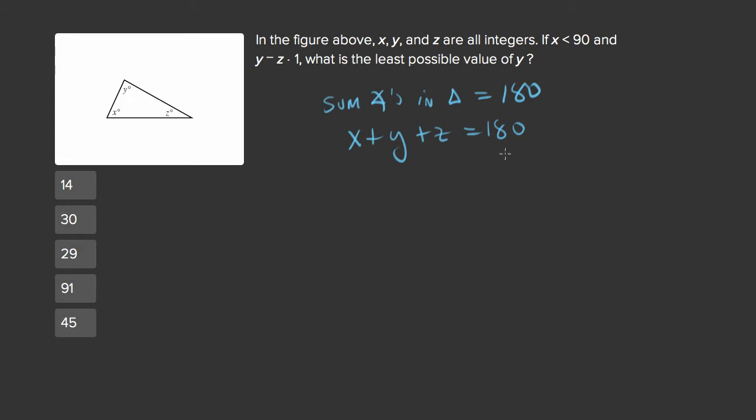Now this is an equation with three variables and we're trying to find the value of variable y. So we can't quite do it yet. In fact we're not actually just trying to find y, we're actually trying to find the least possible value of y. So that's something to keep in mind as we go forward.